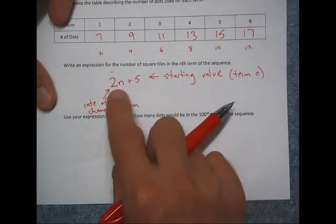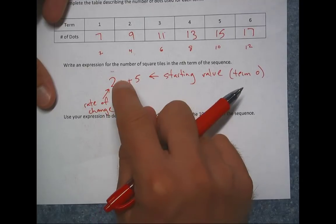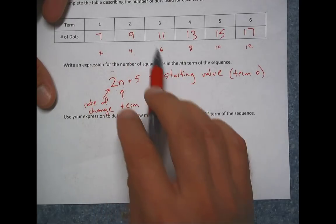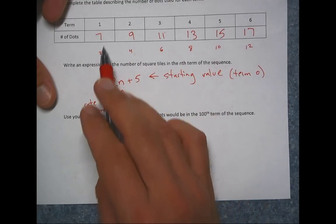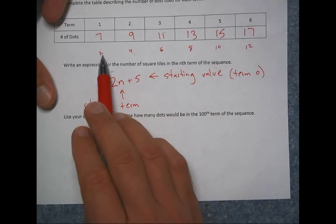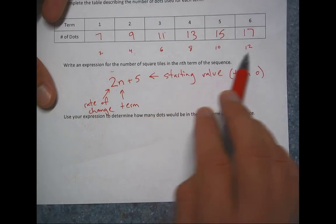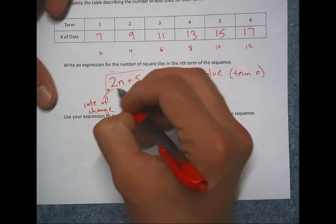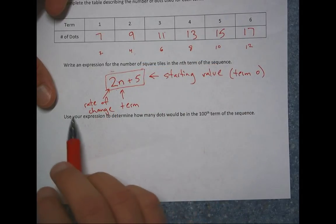The easiest way to find it, I think, is find your rate of change, make that your coefficient to your variable, and then start plugging in the terms and see how far away am I. Sometimes you're going to have to minus. In this case, we had to add five to each one of these numbers to get it to the correct number of dots. So our final expression is two n plus five. So now why did we come up with this?